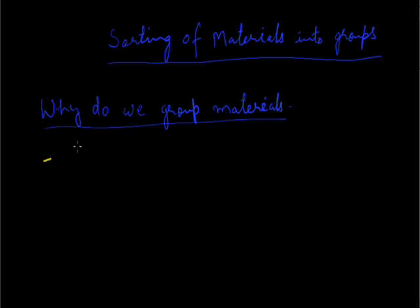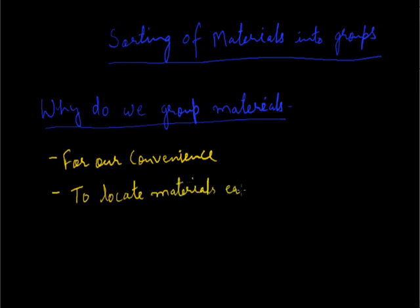The main reason behind the grouping of materials is for our convenience. Such grouping helps us in locating the substance. In everyday life, we often group materials for the sake of our convenience. At home, we usually store things in such a manner that similar objects are kept together and dissimilar objects can be separated from each other.